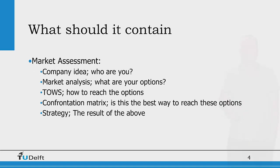What should your business plan contain? The market assessment needs to contain a company idea and a presentation of who you are. A market analysis — so what are your options fitted to your company idea. A TOES, which is the reverse of a SWOT — so a threat, opportunities, weakness and strength analysis. How to reach those options. A confrontation matrix — is this the best strategy to reach these options? And of course a resulting strategy, which is the result of all of the above. These elements will be further detailed in the second presentation on this subject.